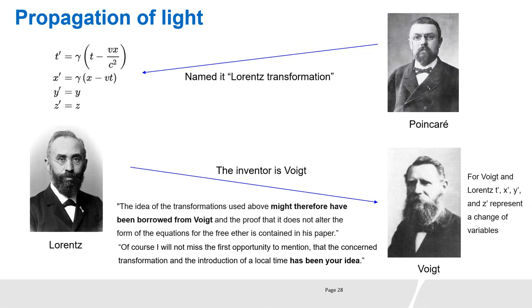Voigt-Lorentz auxiliary variables were called Lorentz transformation by Poincaré. But Lorentz admitted in his book and in a letter to Voigt that the inventor was actually Voigt. Also, for Voigt and Lorentz, it is not about the transformation of space and time, but it is about the change of variables that is used to simplify a complex problem.